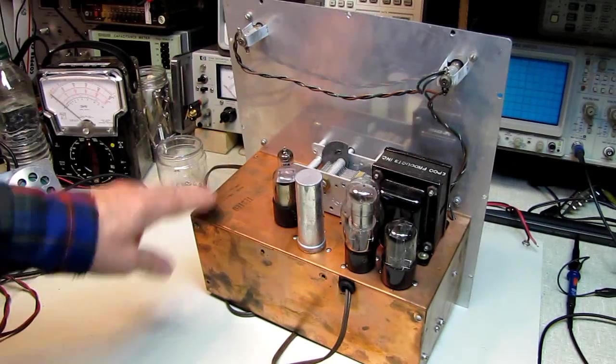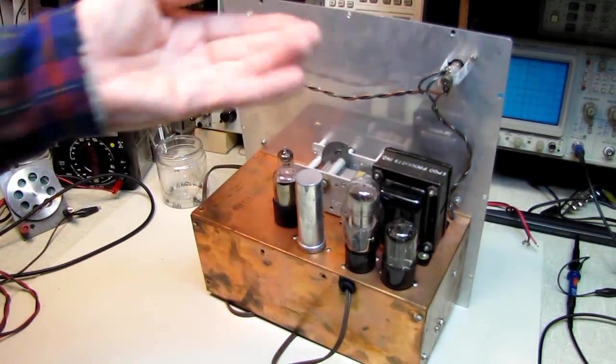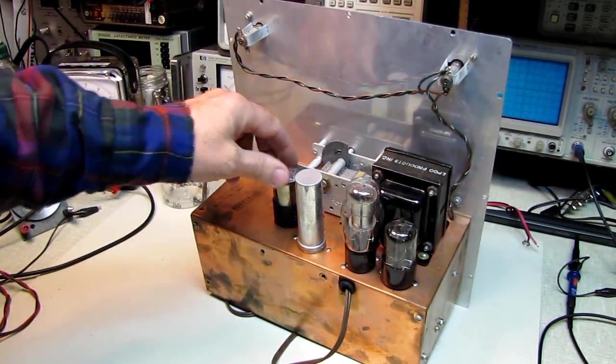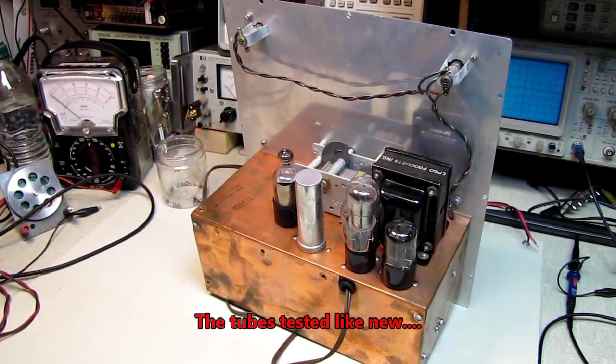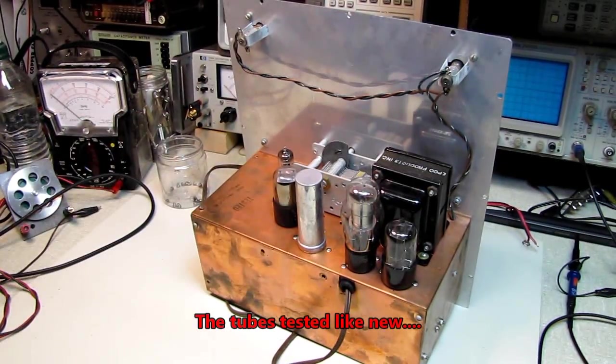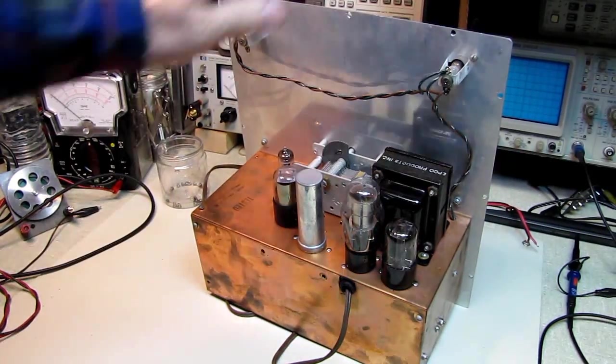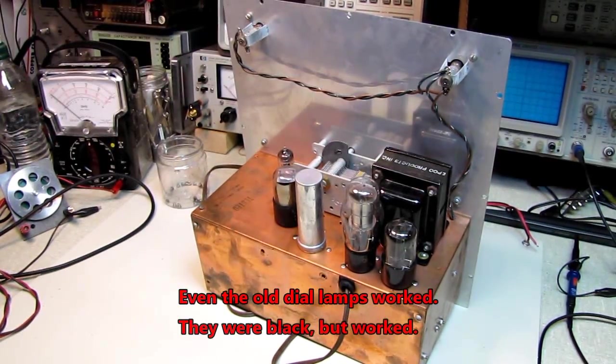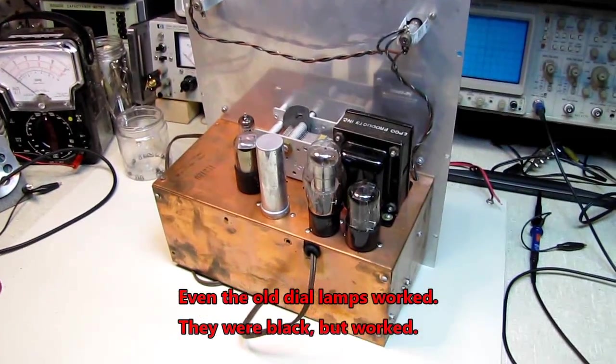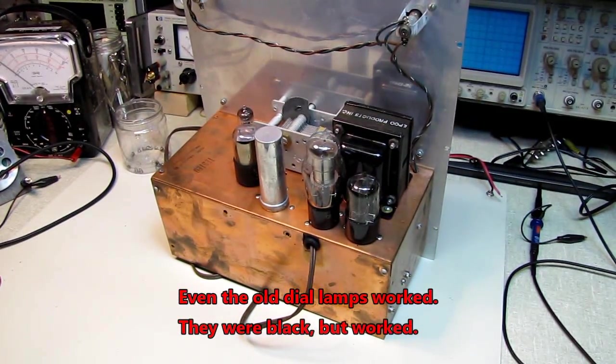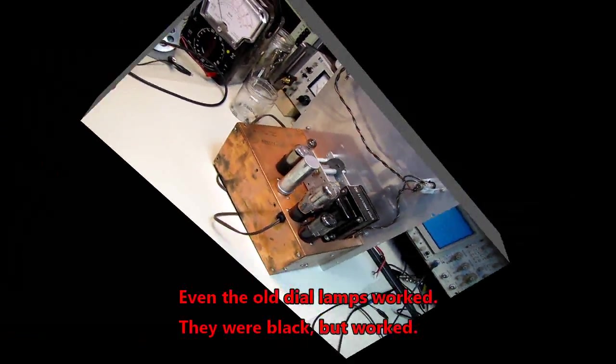I'm just going to refresh the capacitors, run the tubes through the tube tester, replace the electrolytics of course, do a quick calibration and this one will go on the test bench. But thought you might just want to see what the inside of one of these ICO signal generators looks like.